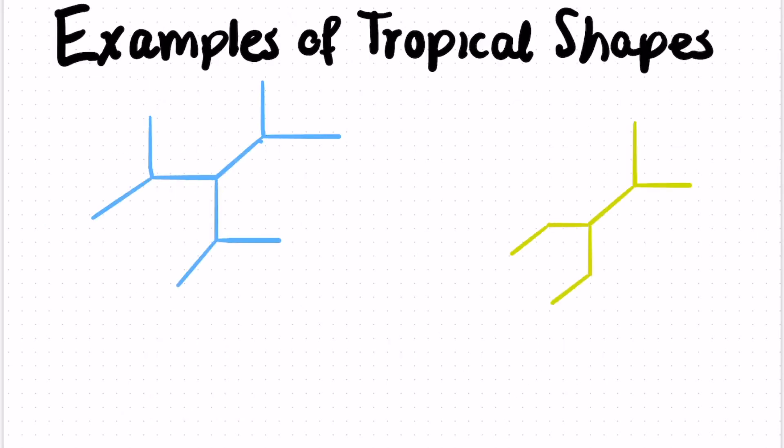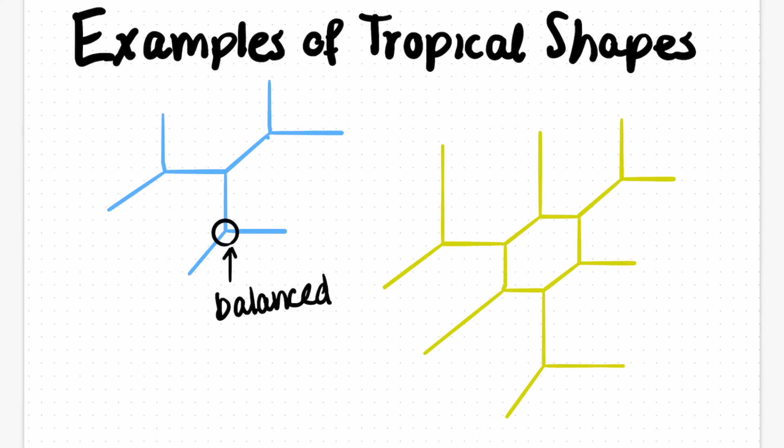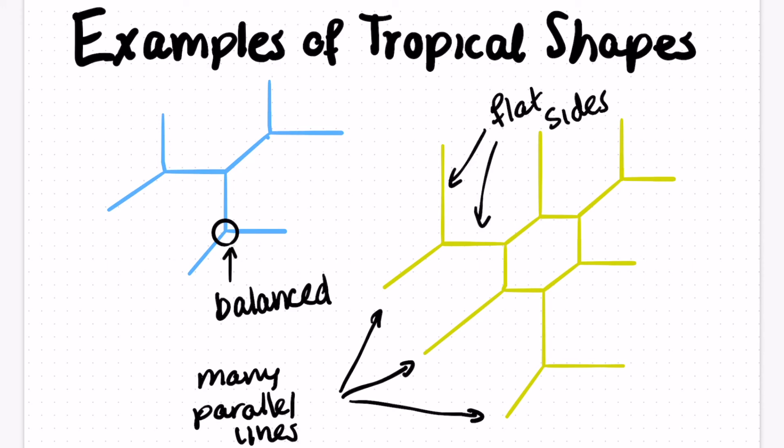Here are some more examples of tropical shapes just so you can get an idea of what they look like. Now let's observe a few things about the tropical shapes. First of all, they all kind of have this funny look about them where they're kind of balanced. Like three people are having a game of tug of war at every vertex. The second thing that we see is many parallel lines emanating in different directions. And one of the most important features that I want to also highlight is that they have flat sides. So in tropical shapes you never see anything curvy like you would with algebraic shapes.